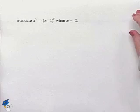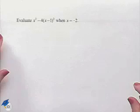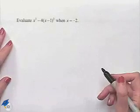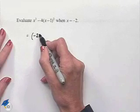In this first example, let's look at evaluating an algebraic expression for a given value. Evaluate x³ - 4(x - 1)² when x equals -2. We're going to substitute the value of -2 wherever we see x.